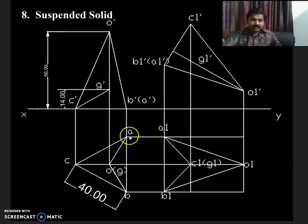So in this case, it's a pyramid. Even prisms can be suspended. So this pyramid is suspended from one of the corners. So in that case, if you are going to suspend from the corner C,